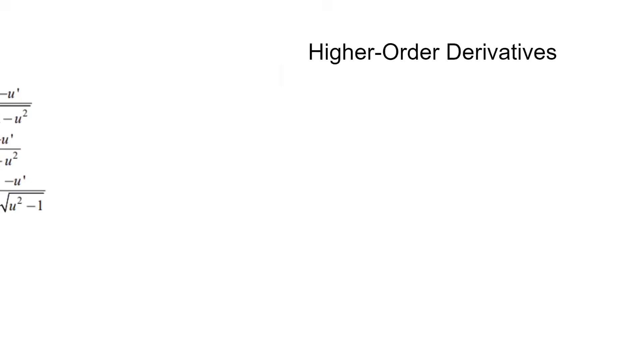Lastly, we have higher order derivatives. These can be notated as d squared y over dx squared, or as y double prime. It basically means taking the derivative of a derivative. For example, with 3x to the power of 4, we get 12x cubed, then 36x squared.